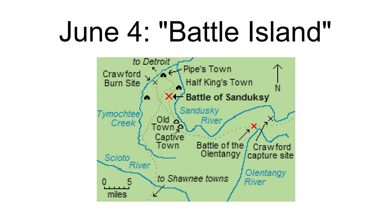The scout party led by John Rose encountered Captain Pipe's Delawares on the Sandusky Plains and conducted a fighting retreat to a grove of trees where they had stored their supplies. The scouts were in danger of being overrun, but were soon reinforced by the main body of Crawford's army. Crawford ordered the men to dismount and drive the Indians out of the woods. After intense fighting, the Americans gained possession of the grove, later known as Battle Island.